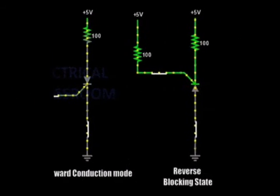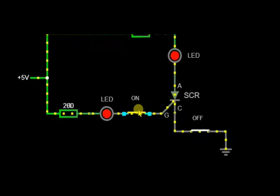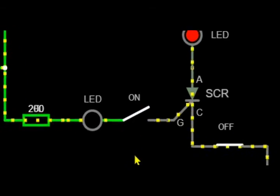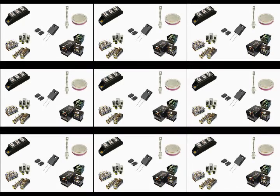When the thyristor is reverse biased, it blocks the current regardless of the gate current applied. When the thyristor is excited to the ON state, it remains in that state even when a gate current is not applied to it.